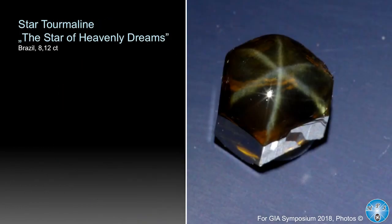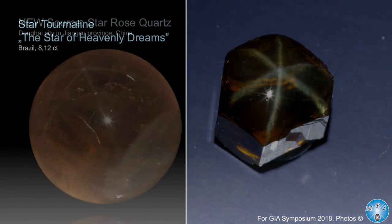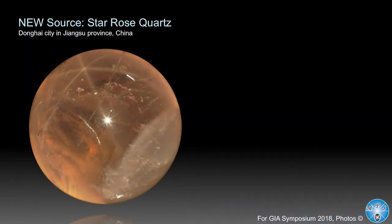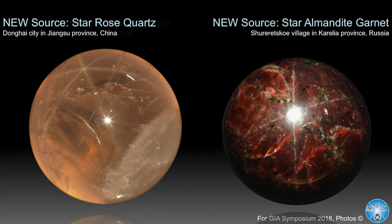Following the beautiful tourmaline presentation — I know it's such a complex stone — this is the Star of Heavenly Dreams: the only really nice existing star tourmaline known to date. There are some other ones published, but this is a really decent stone with a GIA certificate. We also have two new sources of stars: a star rose quartz from Yangshuo province, China, and a star almandine from Russia. As you see, they're not really very beautiful — low to medium quality — but they are new sources never before published. I'm happy to present them here.